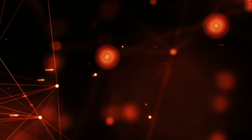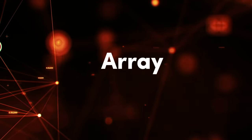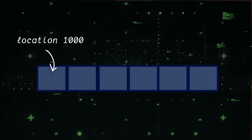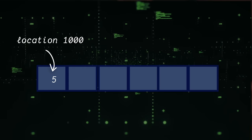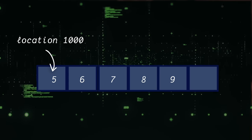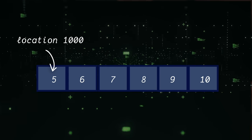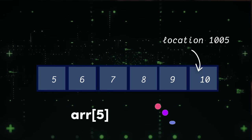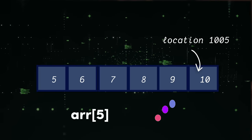Data structure number two is the array. You might already be familiar with arrays because they're super common in all programming languages. The array is quite literally a continuous block of cells in computer memory. By keeping track of its memory location — let's say the location is 1000 — it can instantly compute the location of any item inside of it. For example, if we want to get index number five, we just add five to 1000, get 1005, and then we can pull that value directly out.